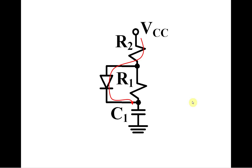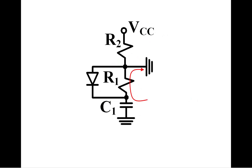And then charging path is just through R2. Discharging path is through R1, so paths are now completely separated.